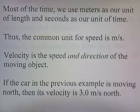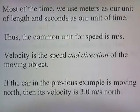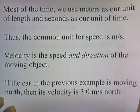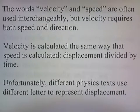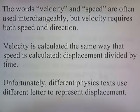Velocity is the speed and direction of the moving object. If a car in the previous example is moving north, then its velocity is 3 meters per second north. Velocity and speed are often used interchangeably, but velocity requires both speed and direction. Velocity is calculated the same way as speed: displacement divided by time.